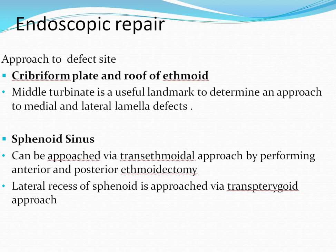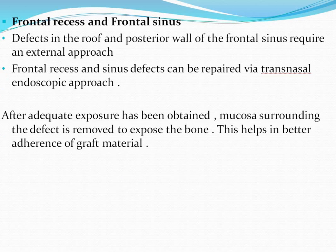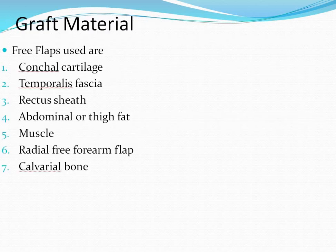Endoscopic repair: approach to the cribriform plate and roof of ethmoid. The middle turbinate is a useful landmark to determine an approach to medial and lateral lamellar defects. The sphenoid sinus can be approached via the transethmoidal approach by performing anterior and posterior ethmoidectomy. The lateral recess of the sphenoid is approached via the transpterygoid approach. Defects in the roof or posterior wall of the frontal sinus require an external approach. After adequate exposure, mucosal surrounding the defect is removed to expose the bone for better graft adherence. Graft materials include conchal cartilage, temporalis fascia, rectus sheath, abdominal or thigh fat, muscle, radial free forearm flap, and calvarial bone.